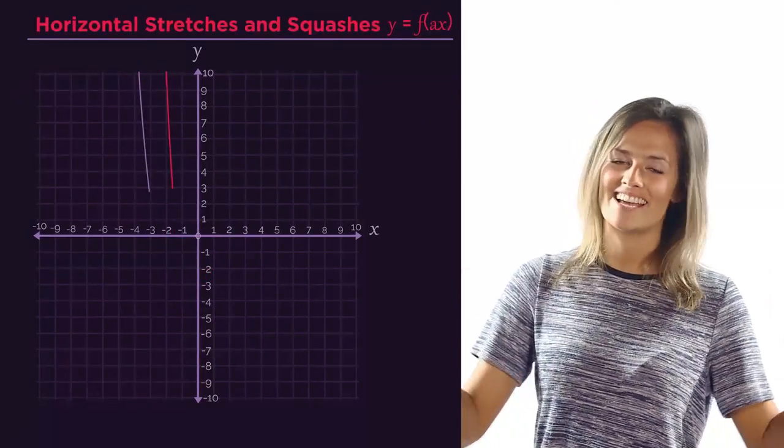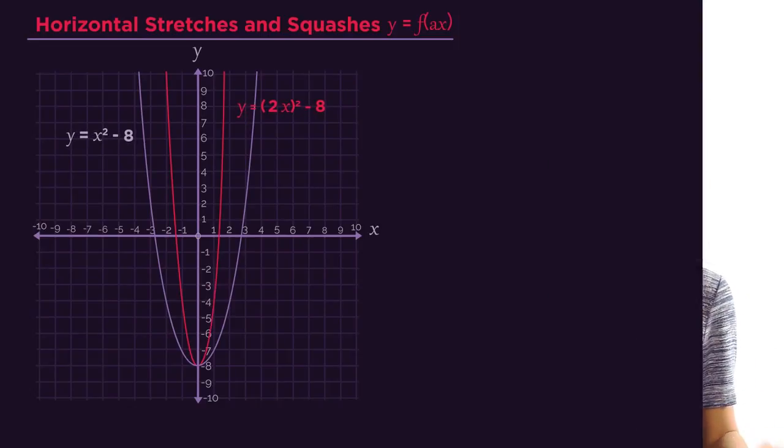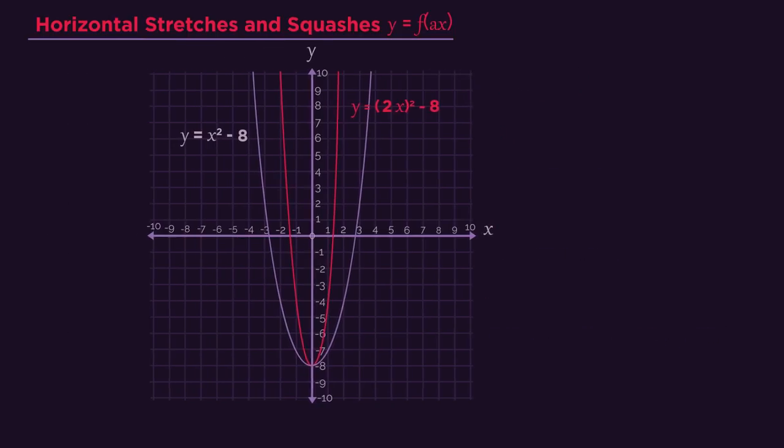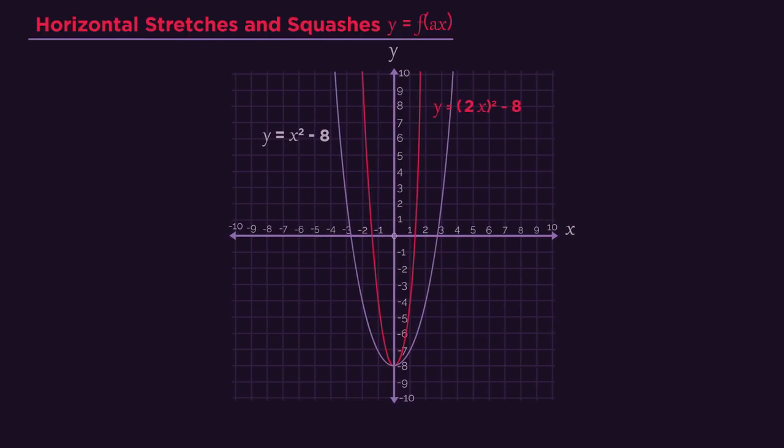Horizontal stretches and squashes aren't much different. As with all horizontal transformations, we apply the transformation directly to the x's. See how the 2 just goes with the x, and ignores the 8.